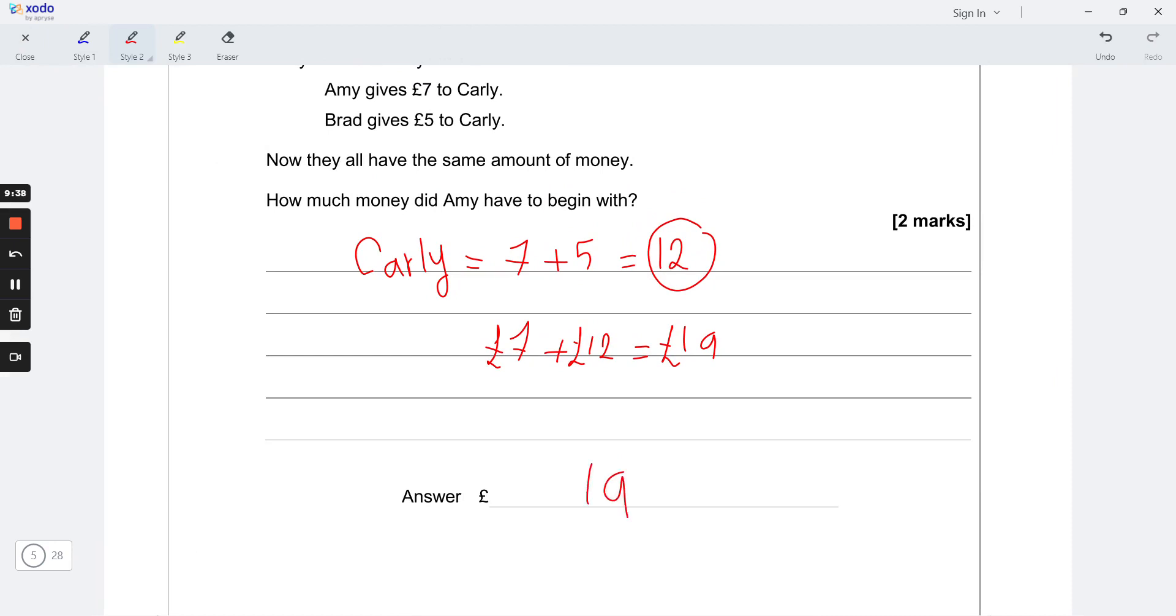You have to write your answer here: £19. After they gave £7 and £5, Carly has £12. Now they say that they all have the same amount of money. They have the same amount now: Amy, Brad, and Carly have £12, £12, £12. So how much money did Amy have to begin with? She had to begin with £19. So £19 - £7 = £12.